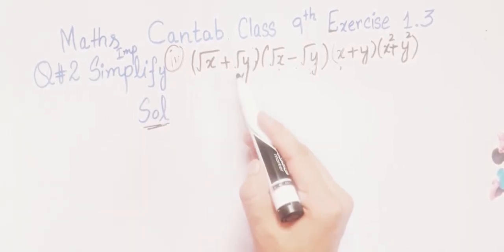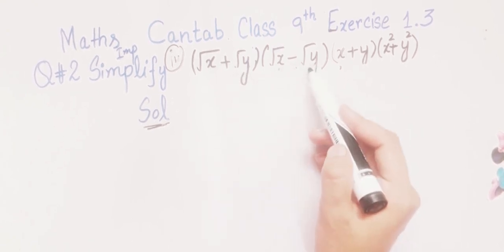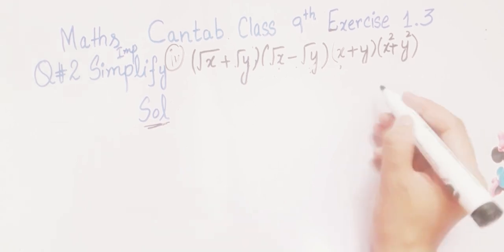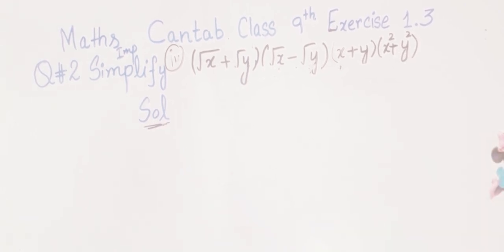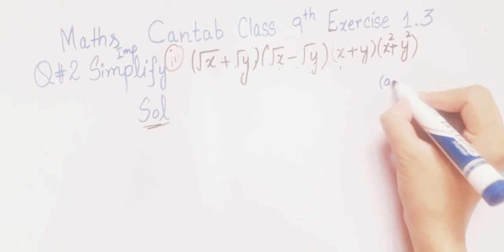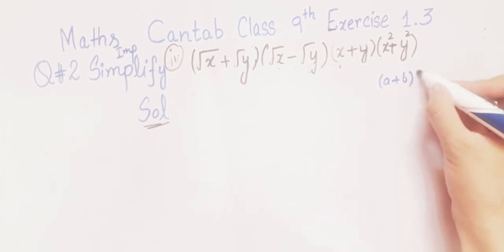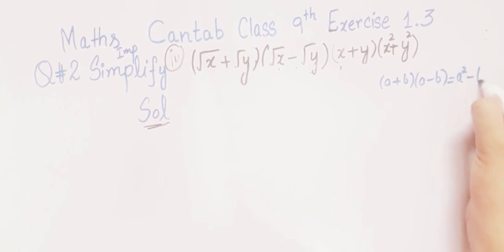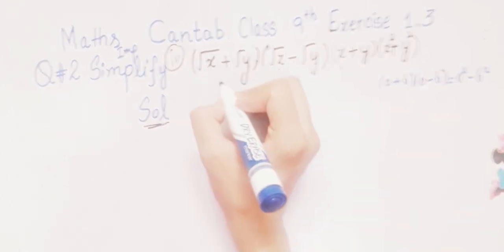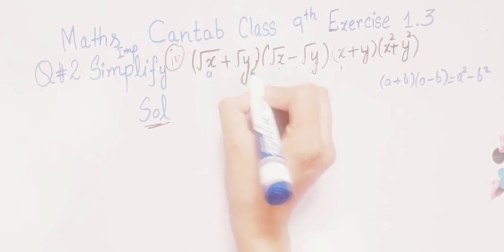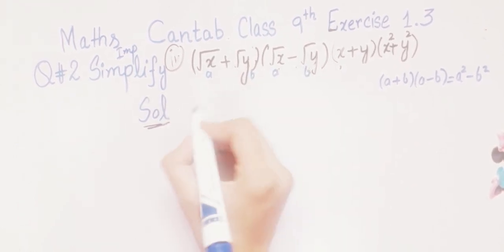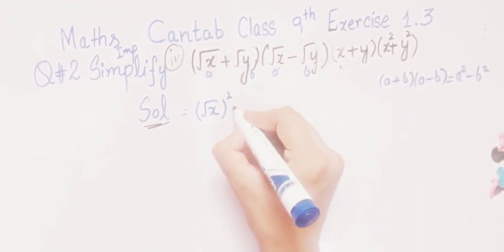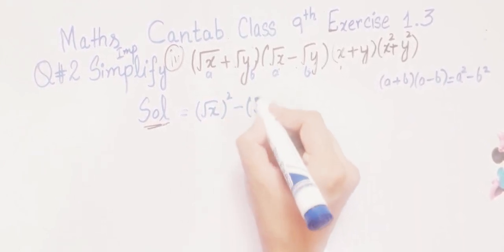Now we will do the last part: (√x + k√y)(√x - k√y)(x + y)(x² + y²). First, recall the formula (a + b)(a - b) = a² - b². We apply this formula to the first two brackets, where √x is a and k√y is b. So (√x + k√y)(√x - k√y) = (√x)² - (k√y)².